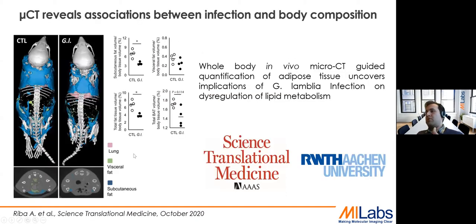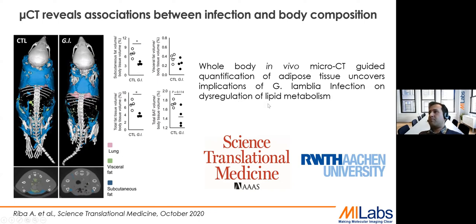This leads to this slide — a nice paper published from University of Aachen in Science Translational Medicine. They were looking at obesity and fat, doing microCT scans on healthy mice and infected mice and analyzing the images. They were even able to differentiate between two different fat types: visceral fat and subcutaneous fat, and could do further analysis. They showed that infection can cause dysregulation of lipid metabolism. Of course, this can be directly applied to studying osteoarthritis — we just need a CT scan to determine obesity, how much fat has formed, and then make the association between fat content and the severity of joint disease.